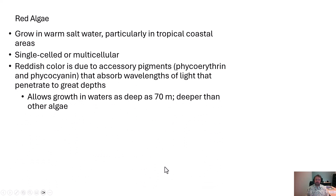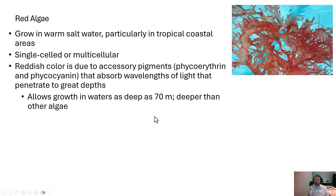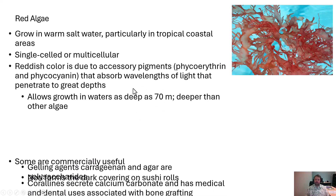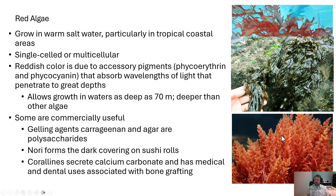Red algae is another group often considered a plant. Phycocyanin is what gives it the red color. There are lots of varieties — some are loose with thin multicellular membranes, and some are much thicker with calcium carbonate secretions. The corallines they release are used medically because the calcium carbonate allows for things like bone grafts to do better. Nori is this group — the one people commonly consume for sushi rolls and dried kelp patties.